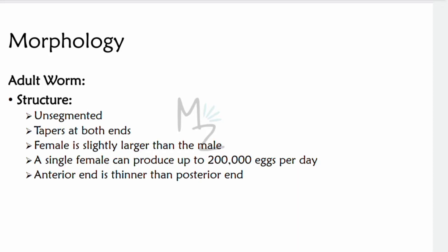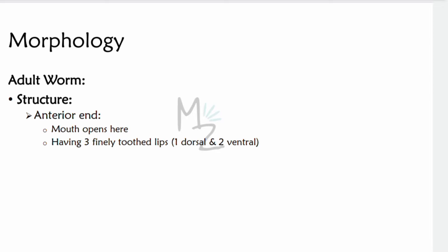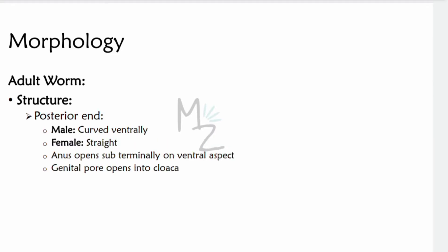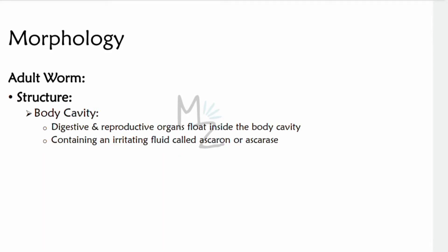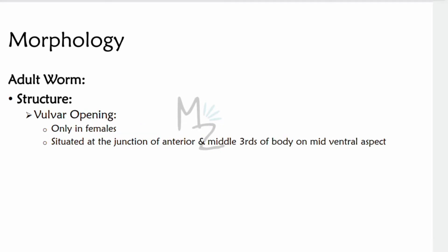The anterior end is thinner than the posterior end. The mouth opens at the anterior end with three finely toothed lips — one dorsal and two ventral. At the posterior end, the male is curved ventrally while the female is straight. The anus opens subterminally on the ventral aspect, and the genital pore opens in the cloaca. The body cavity contains an irritating fluid called Ascaron or Ascarase.